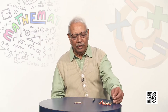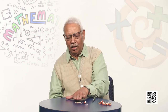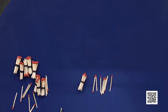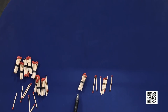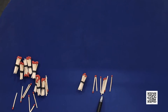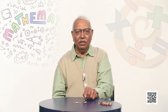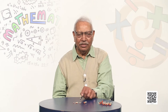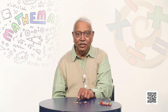Now let us count further. How many sticks are these? What I have done is I have put a bundle of 10 sticks here. So if I ask you how many sticks are there now, this is a bundle of 10, so we will start counting forward from 10: 10, 11, 12, 13, 14, 15, 16, 17, 18. So in answer to the question how many sticks, we will say there are 18 sticks here.